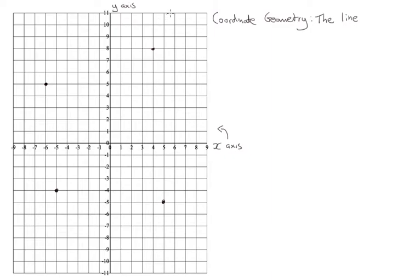We have four different quadrants — one here, one here, one here, and one here. Coordinates always look like this: you'll have brackets, then a comma which divides two numbers, which are the coordinates.